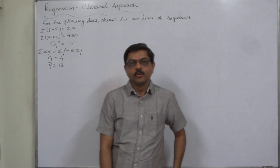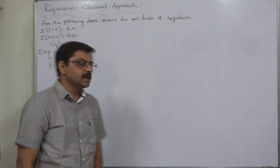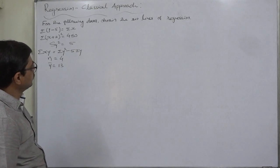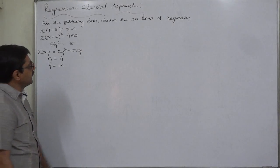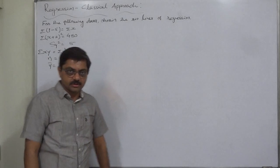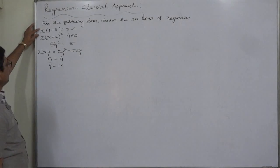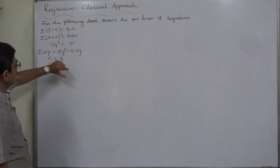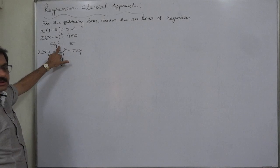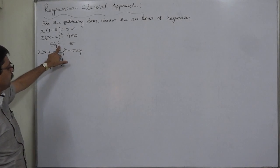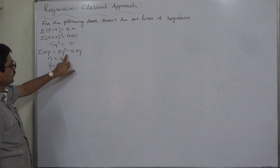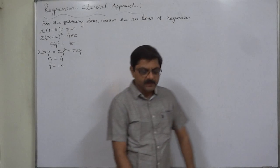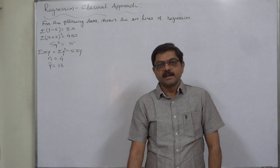Hello and welcome again. A new case in regression — linear regression, classical approach. This is a unique, very rare case where some scattered information is given and we need to obtain the two lines of regression. The information available is: σ(y − 5) = σx, σ(x + 2)² = 480, σy² (variance of y) = 5, σxy = σy² − 5σy, and ȳ = 13.